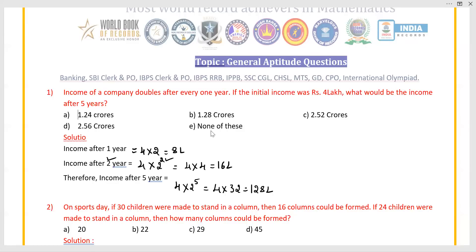But the options are given in crores, so convert 128 lakhs into crores. The value of 1 lakh is equal to 0.01 crore, so multiply 128 with 0.01 crore. The answer is 1.28 crore. Option B is the right answer.